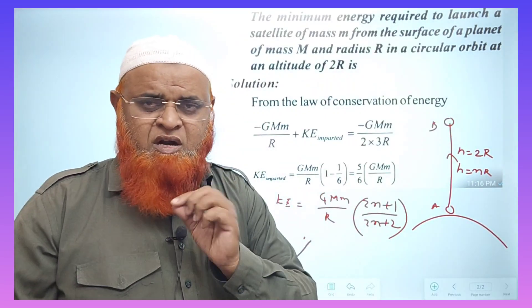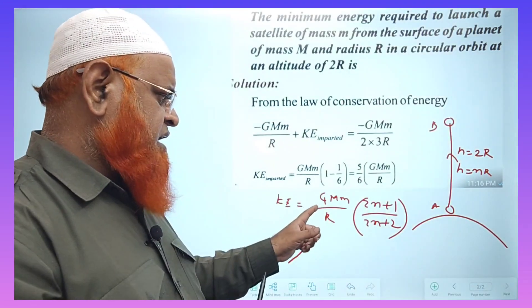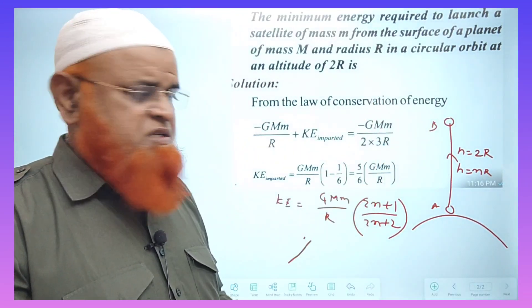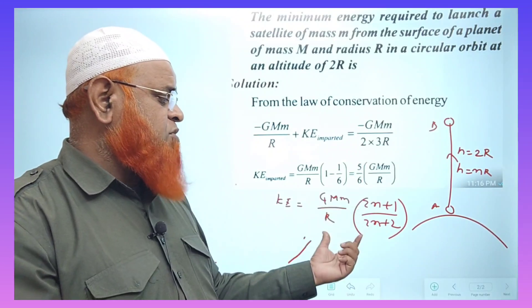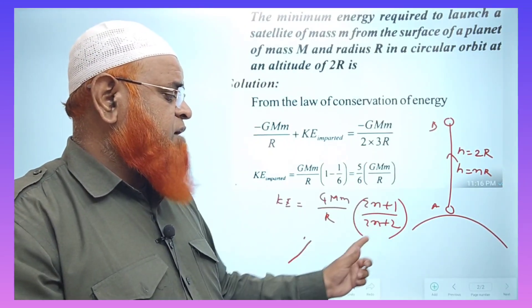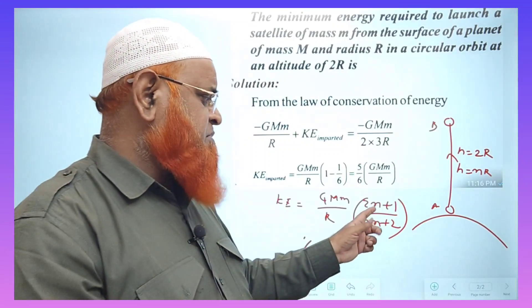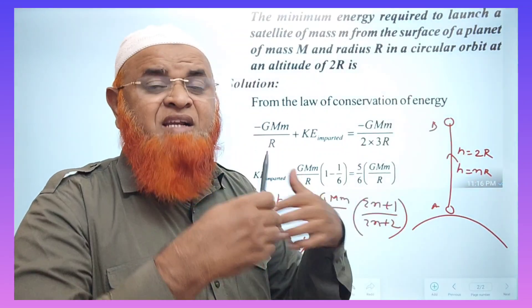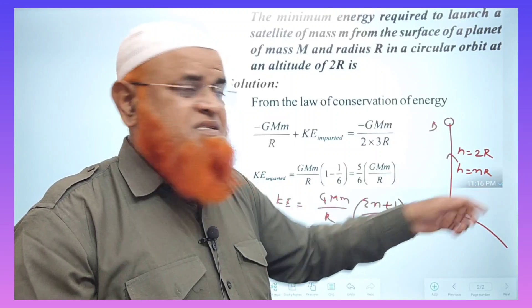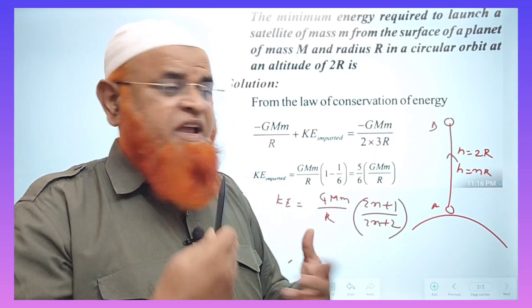I will give you a super simple shortcut method. You will write, if you want to project the body upwards, you will write a shortcut that is GMm by R, 2 into N plus 1 by 2 into N plus 2. What does it mean actually? N means what? If it is thrown to a height of 2R, then it is height of 2R. 2 can be taken as N into R.